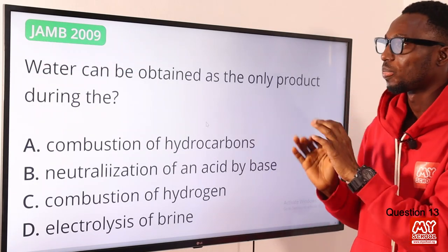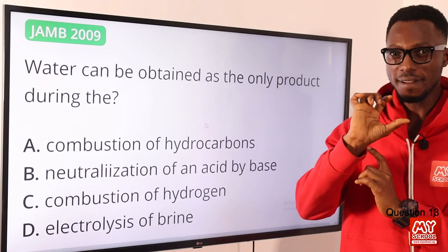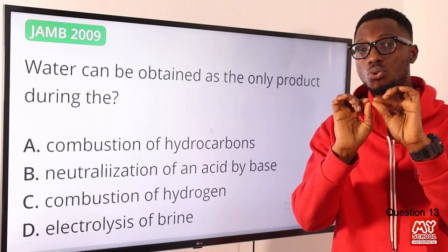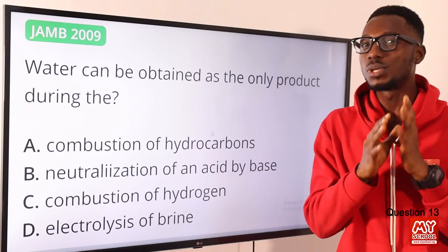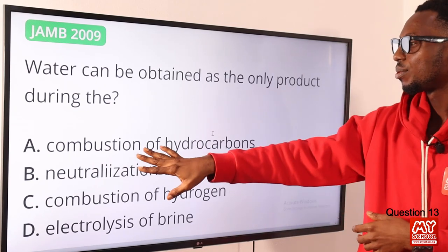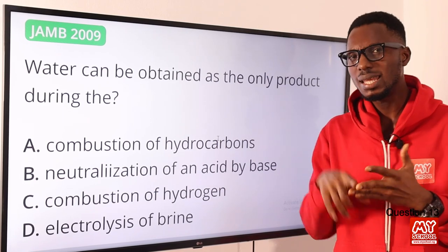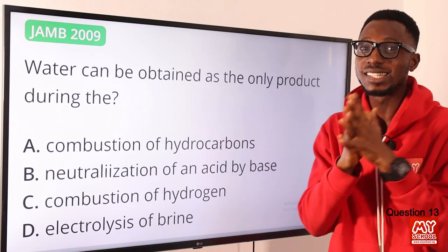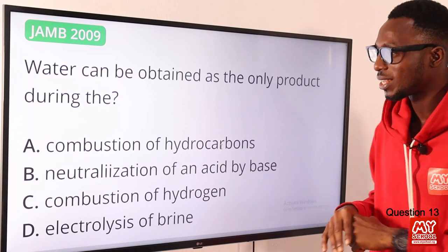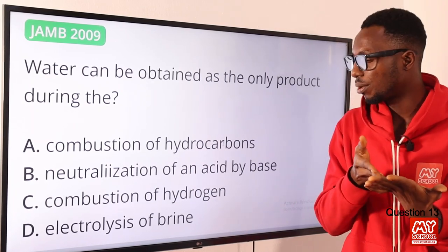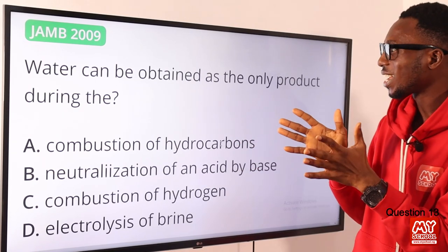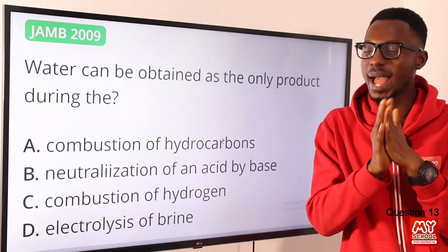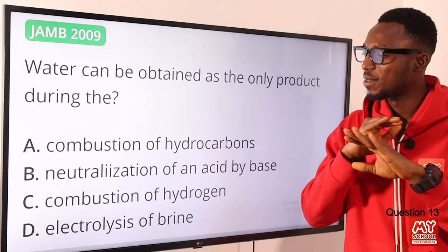Question 13: water can be obtained as the only product during the combustion of hydrogen. Pure hydrogen burns with a pale blue flame and combines with oxygen to give steam (water). Combustion of hydrocarbons gives carbon dioxide, heat, and water — water is not the only product. Neutralization of an acid by a base gives salt and water. Electrolysis of brine gives hydrogen, sodium hydroxide, and chlorine. So water is the only product only during combustion of hydrogen. Option C is the correct option.